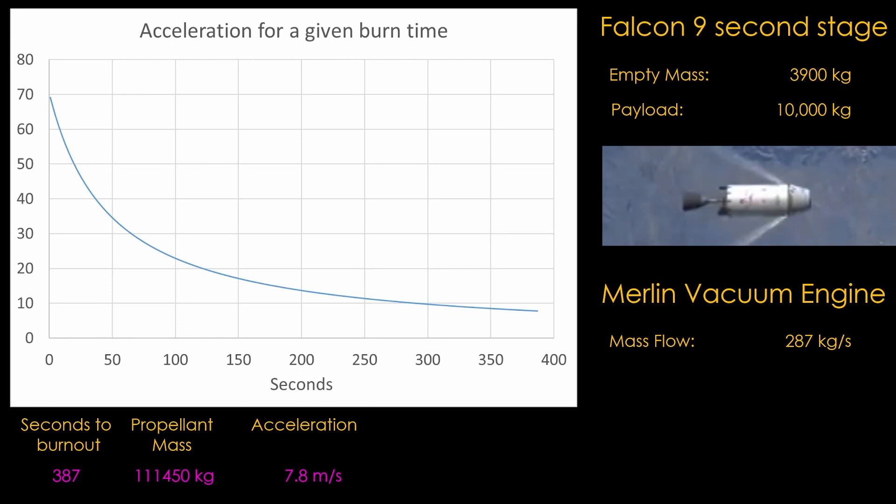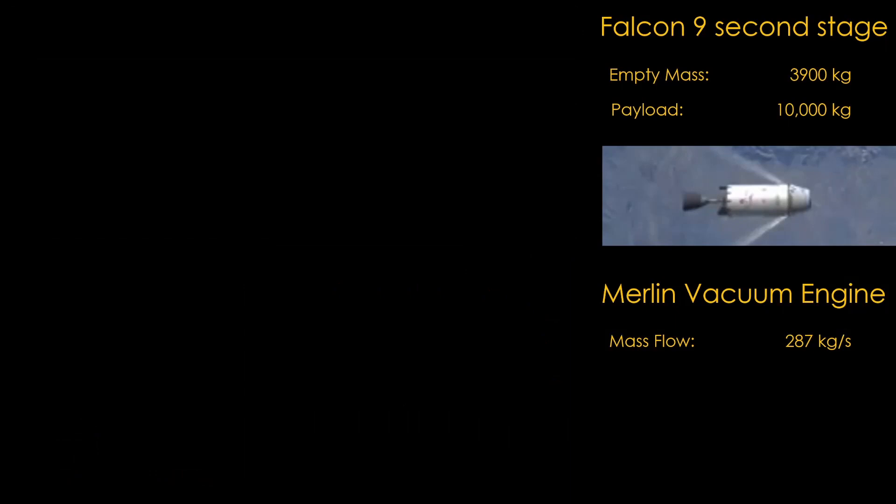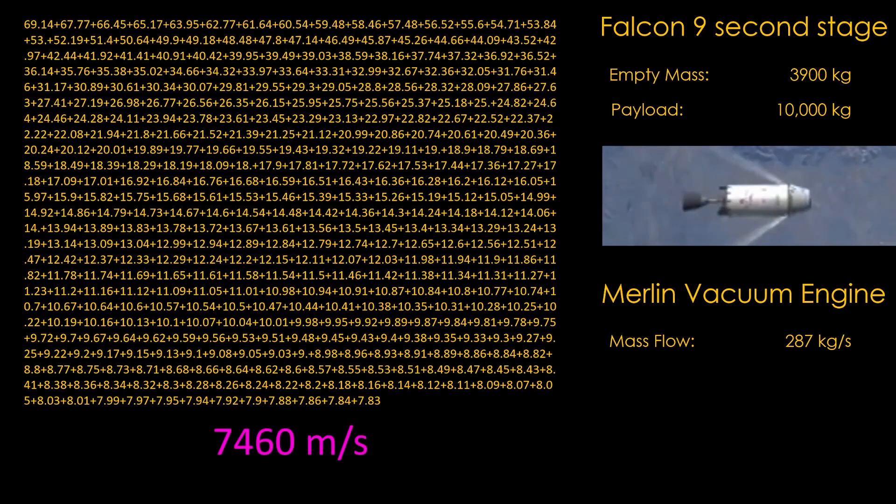Doing this for the full burn gives us the following graph. On the right side when the stage is full, it's very heavy and the thrust of the engine can only accelerate it slowly. On the left side, when the stage is nearly empty, it's very light, and the thrust can accelerate it much faster. It's a very simple concept. If we want to know the total acceleration for this payload, we can add up the accelerations for each second. That gives us 7,460 meters per second. It's known as delta v, where delta is the term used to mean change, and v means velocity. You might also see it written using the Greek letter delta. That's what the cool kids like to do.